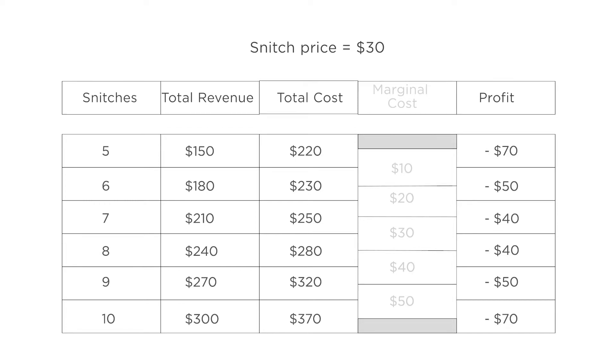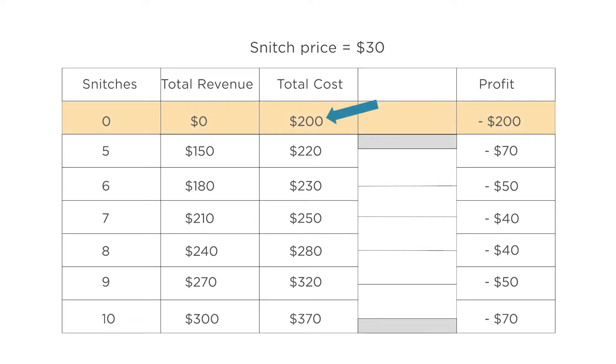If the snitch maker called it quits and stopped all production, it's still on the hook for the $200 in fixed costs. That's equivalent to having profits of negative $200. This is even worse than the profit-maximizing choice to produce 8 snitches for a profit of negative $40. It might not sound like a very good deal, but I think we can all agree that losing $40 is a whole lot better than losing $200.